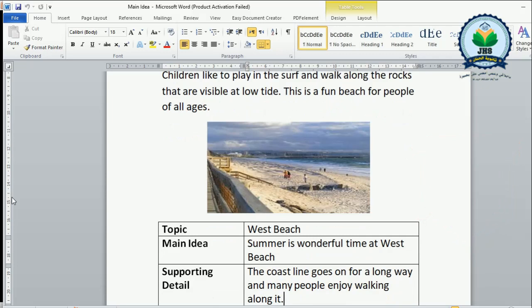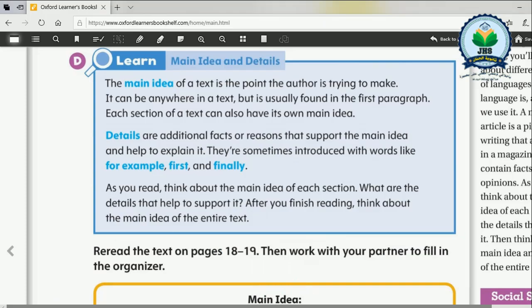Let's open our student book and read exercise D. The main idea of a text is the point the author is trying to make. It can be anywhere in a text but is usually found in the first paragraph. Each section of a text can also have its own main idea.